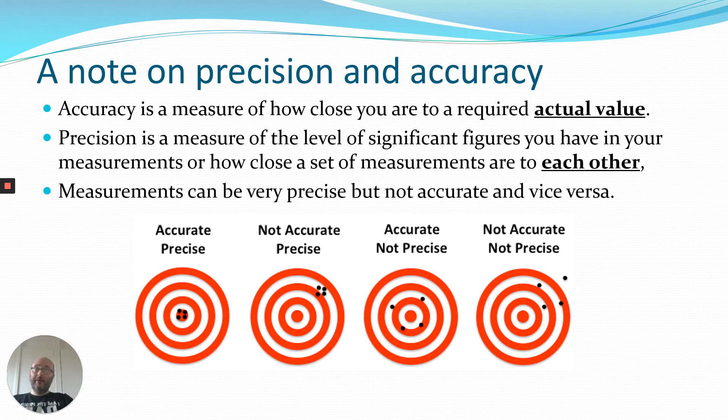The third one is accurate but not precise, so we can tell it's not precise immediately because all of the shots are scattered around. But if you actually look at them, if you were to average the X and Y positions of all of those shots, you would find that the average would be in the middle. So they're scattered around the middle, just not very precisely. And the final one is just away, isn't it? It's not accurate, it's not precise. It's nowhere near the middle and nowhere near together.